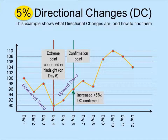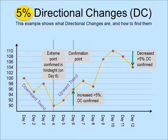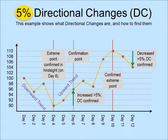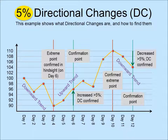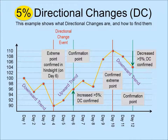104, on the other hand, is more than 5% below 110, the highest price in the current trend. So we conclude on day 12 at the price of 104 that a downturn directional change has occurred. We conclude in hindsight that the price 110 on day 10 was an extreme point, from where a downward trend started. We define the price changes from 90 on day 4 to 96 on day 6 as a directional change event.